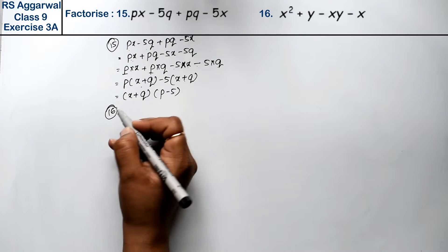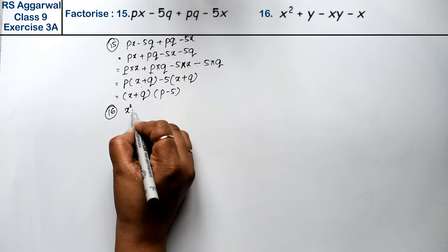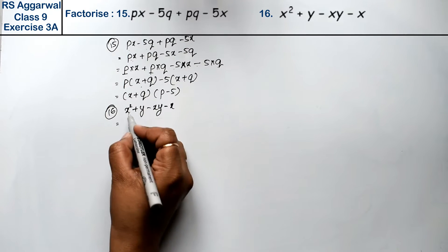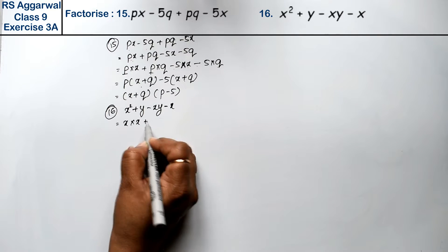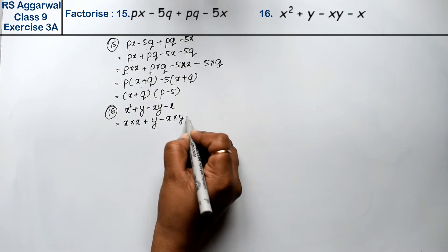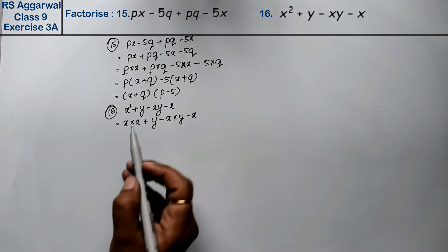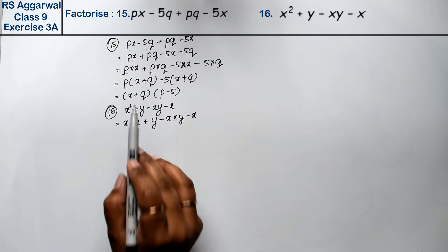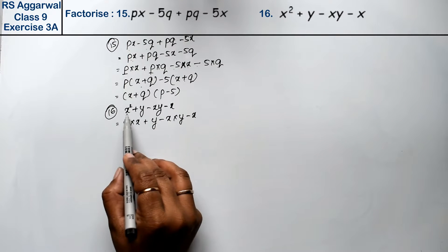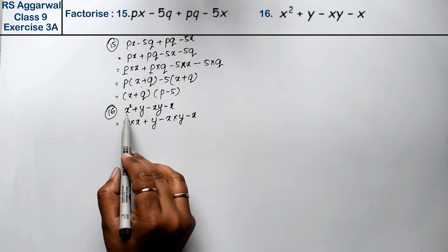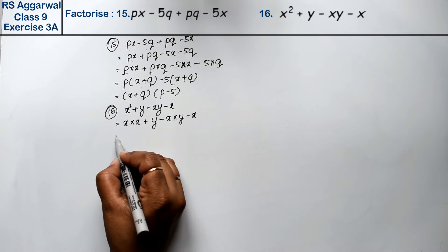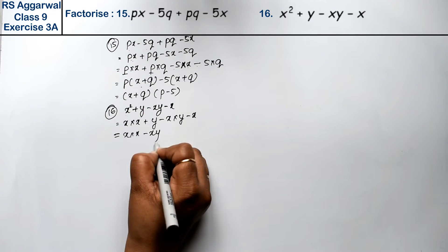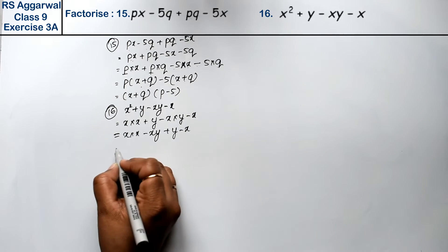Let's do the 16th question. Question 16 is x squared plus y minus xy minus x. We can write this as x into x plus y minus x into y minus x. If we take the first pair and the second pair, then we see x is common in the first pair.